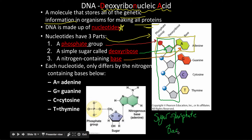The sugar-phosphate backbone is consistent throughout, and the bases are A, G, C, and T — adenine, guanine, cytosine, and thymine. A little more detailed structure of the bases is shown in the diagram.